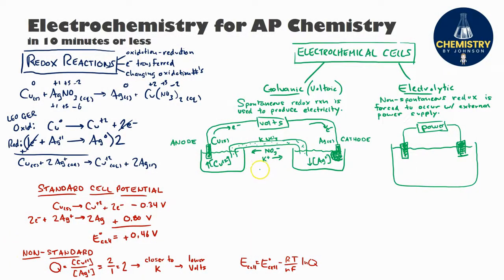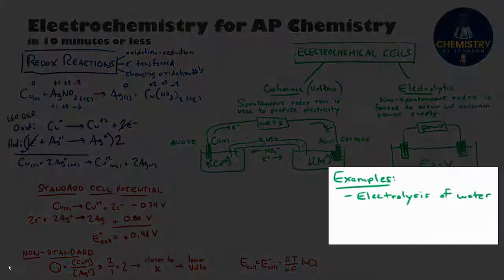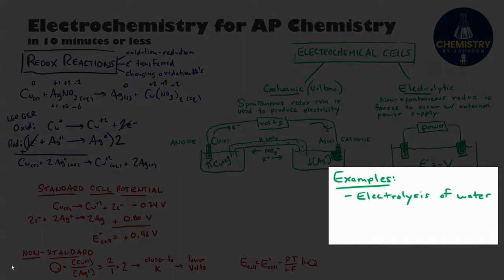The good news is that pretty much everything we've done so far with galvanic and voltaic cells can be applied to electrolytic cells as well. Some key differences will be that if you calculate the standard cell potential, you'll notice that the value comes out as a negative voltage. That makes sense because this reaction is not spontaneous and would not happen on its own. For the same reason, these reactions will have K values less than one and positive delta G's.